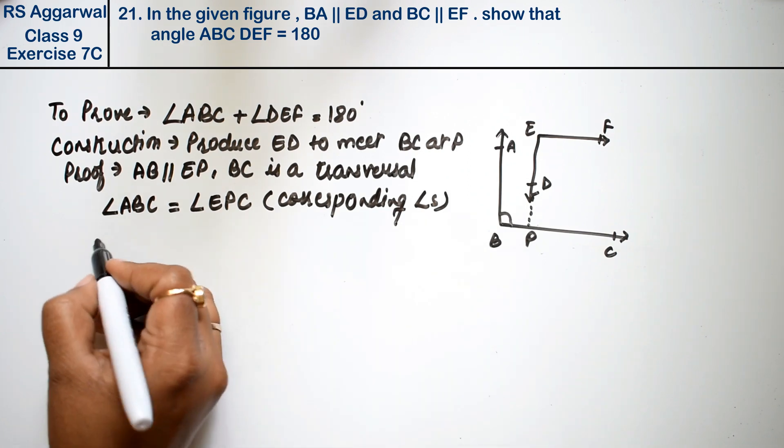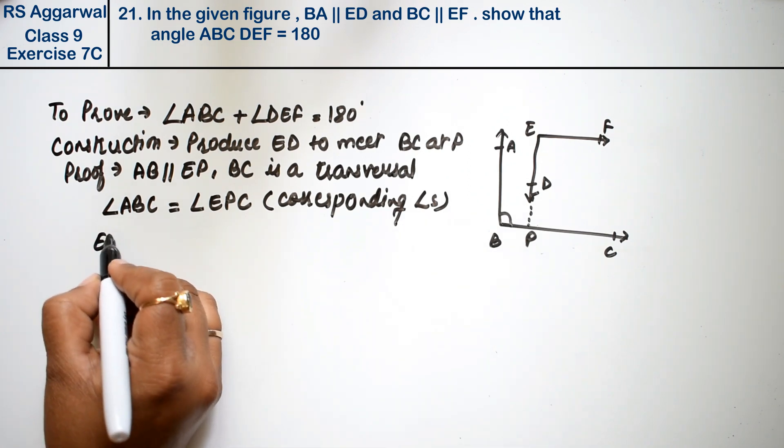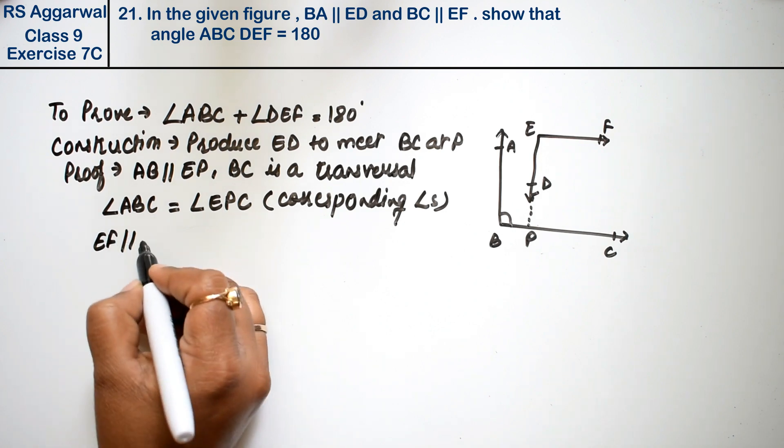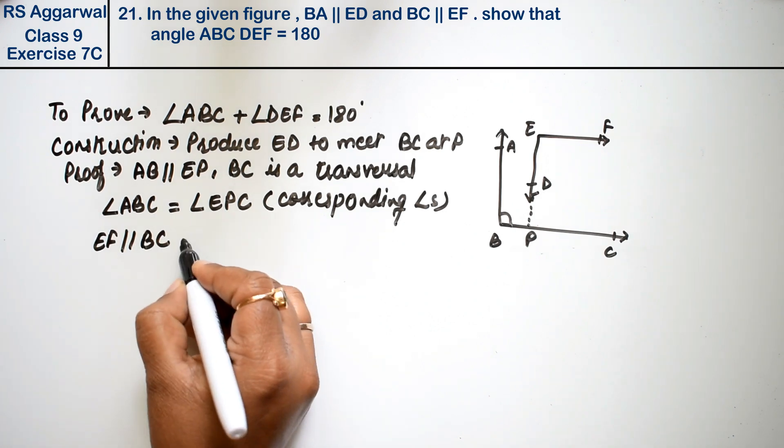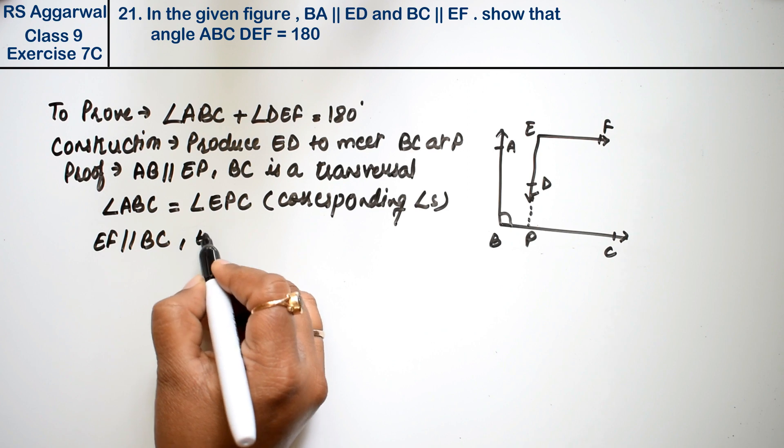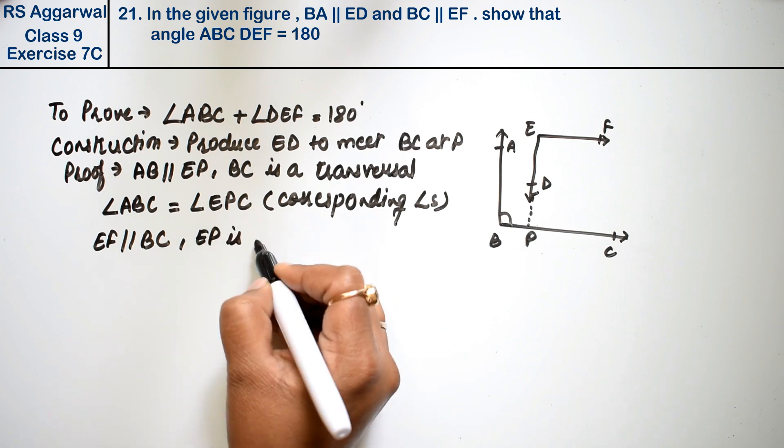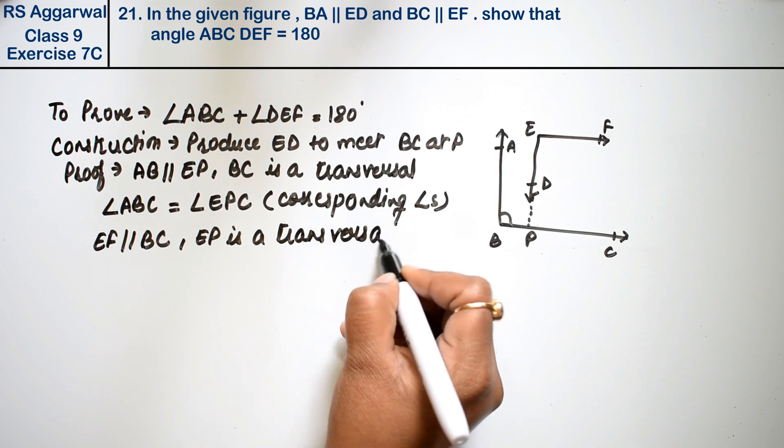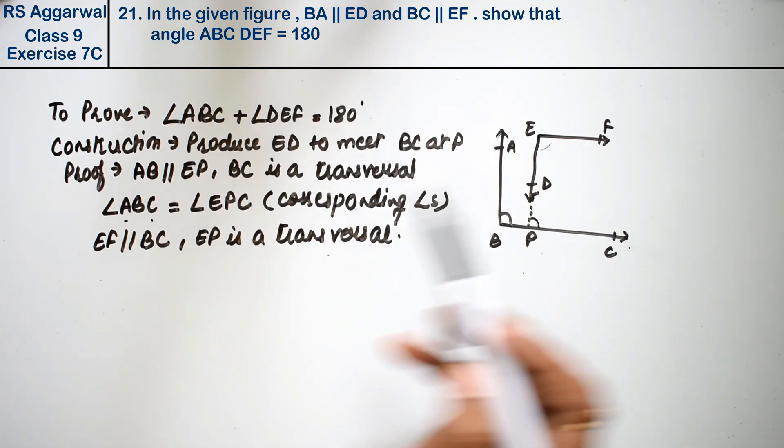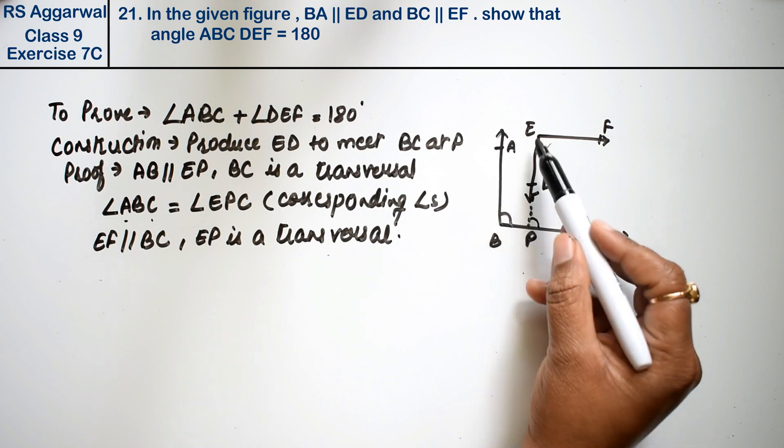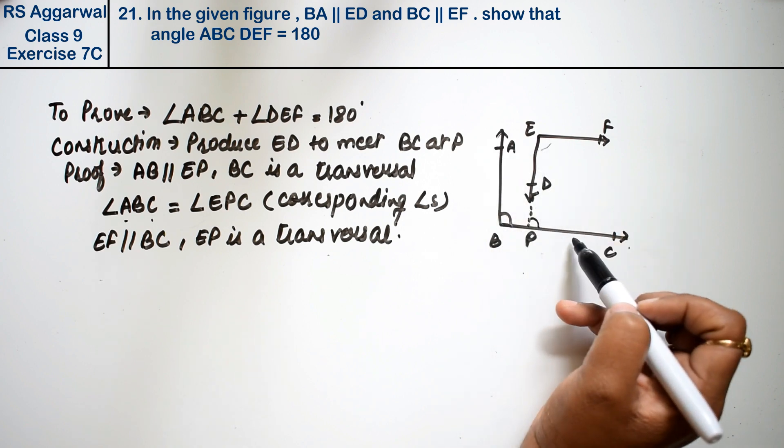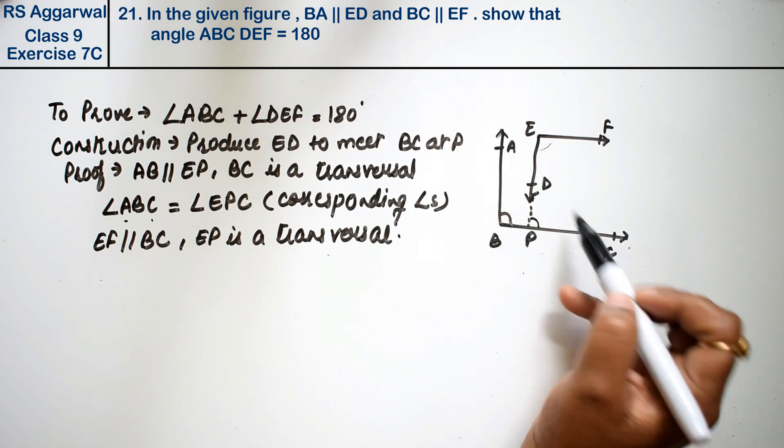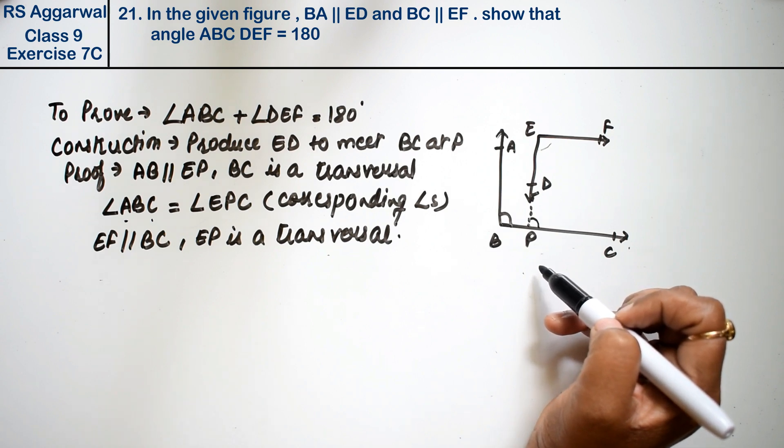Now we know that EF is parallel to BC, and EP is a transversal. Like these two angles were parallel and this was a transversal, now these two angles are parallel and this is a transversal.